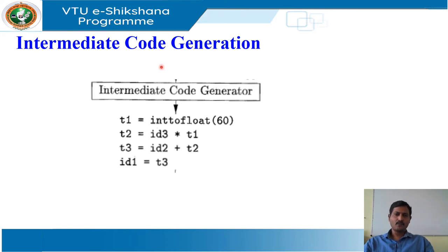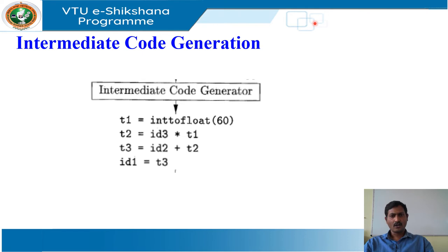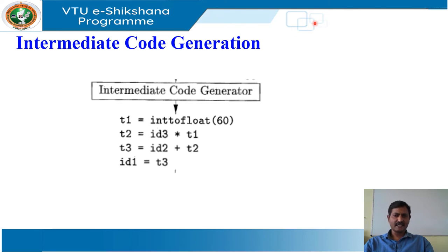There are several important points about three-address instructions. First, each three-address assignment instruction has at most one operator on the right-hand side. Thus, these instructions fix the order in which the operations are to be done, with multiplication preceding addition in the source program. Second, the compiler must generate a temporary name to hold the value computed by a three-address instruction. Third, some three-address instructions, like the first and the last in the sequence, have fewer than three operands.